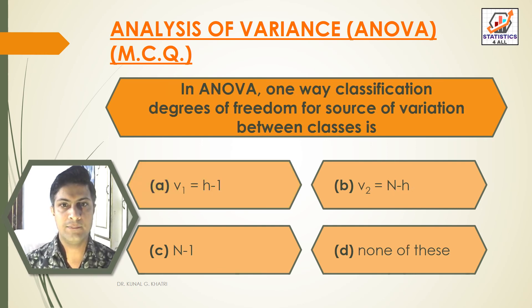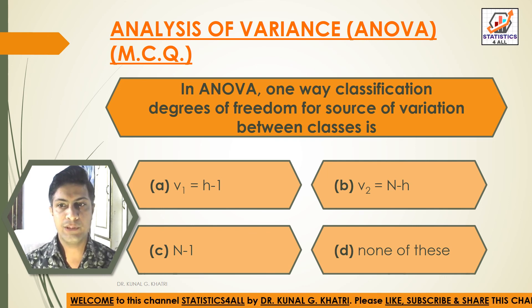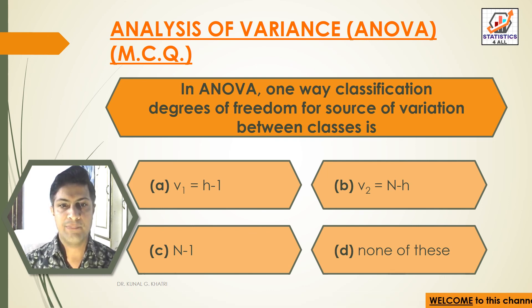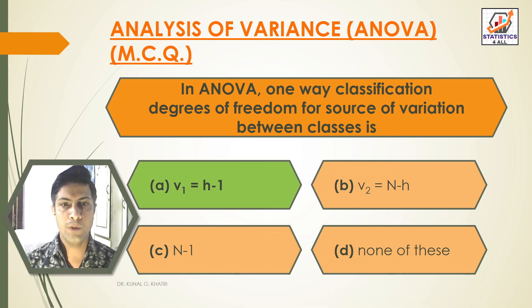Next question: In ANOVA one-way classification, the degrees of freedom for the source of variation between classes is — Option A: v1 = h − 1. Option B: v2 = N − h. Option C: N − 1. Option D: None of these. Answer: Option A, v1 = h − 1. In ANOVA one-way classification, the degrees of freedom for variation between classes is v1 = h − 1.